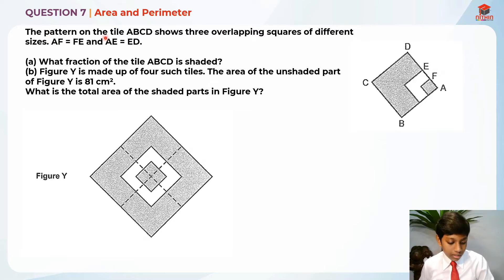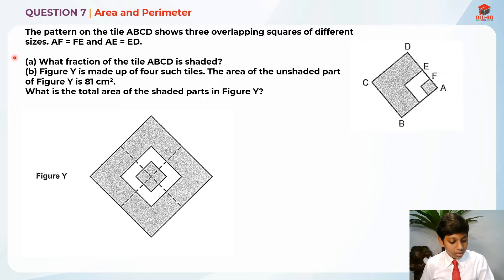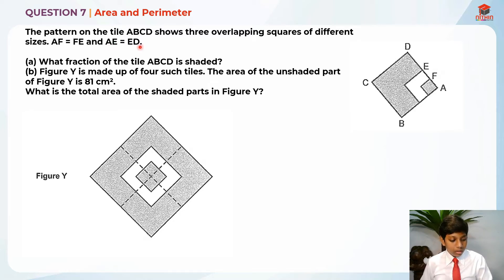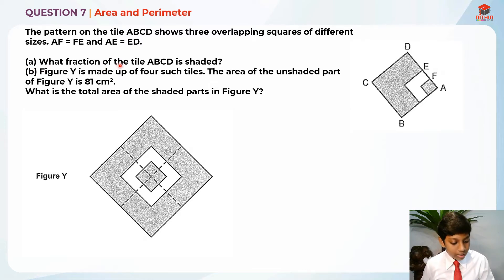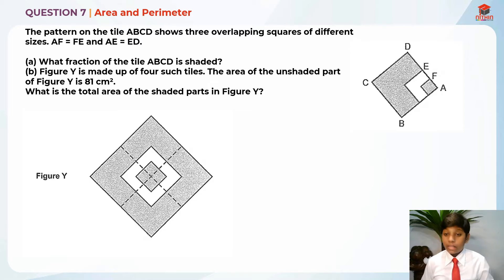The pattern on tile ABCD shows 3 overlapping squares of different sizes. AF equals FE, and AE equals ED. For part A: what fraction of the tile ABCD is shaded? Now that we have read the question, let's highlight the key information.